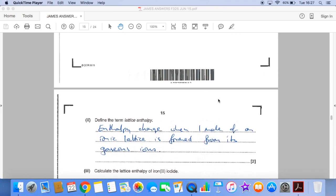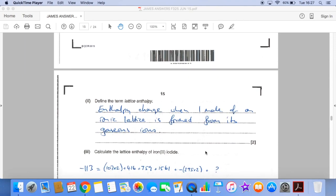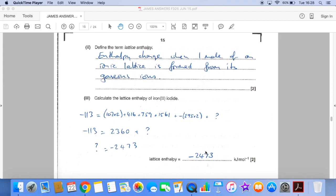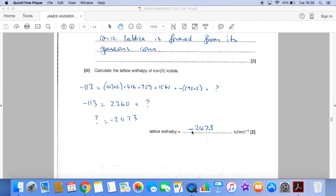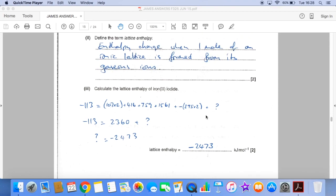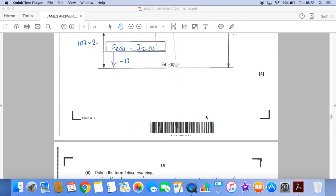Define the term lattice enthalpy. Well, that's the enthalpy change when one mole of an ionic lattice is formed from its gaseous ions. And then calculate the lattice enthalpy of iron(II) iodide. Well, there's the answer there, minus 2473. I'll go back to the cycle and show you where that comes from.